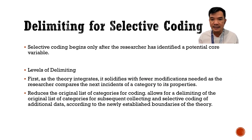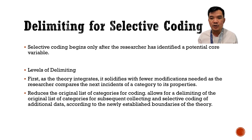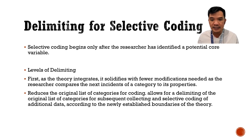There are two levels of delimiting in selective coding. Number one, as the theory integrates, it solidifies with fewer modifications needed as the researcher compares the next incident of a category to its properties. Second, it reduces the original list of categories for coding, which allows for a delimiting of the original list of categories for subsequent collecting and selective coding of additional data, according to the newly established boundaries of the theory.